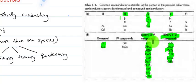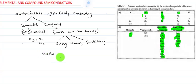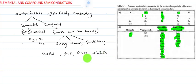Now we are going to discuss the applications of compound semiconductors. Their main applications are in high-speed switching devices. For example, in LEDs we are using gallium arsenide, gallium phosphide, and gallium nitride. These are used for manufacturing LEDs. Compound semiconductors are mainly used in high-speed devices and in devices requiring emission or absorption of light, such as LEDs.